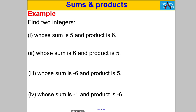We're looking for two integers whose sum is 5 and product is 6. Factors of 6: 1×6 and 2×3. Which pair sums to 5? 2 and 3. So our numbers are 2 and 3. Next: sum of 6 and product of 5. What multiplies to 5? Only 1×5, since 5 is a prime number. And 1+5=6 — so our numbers are 1 and 5.